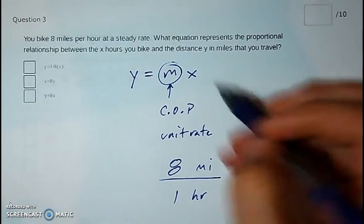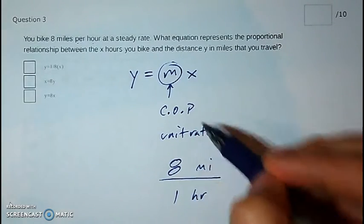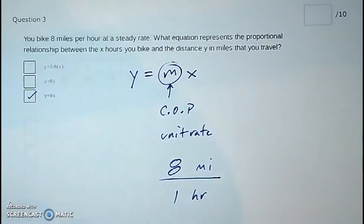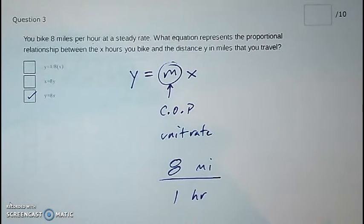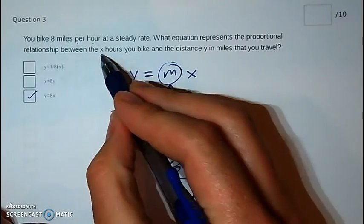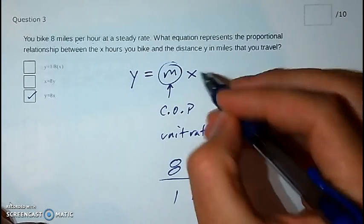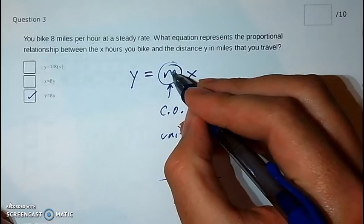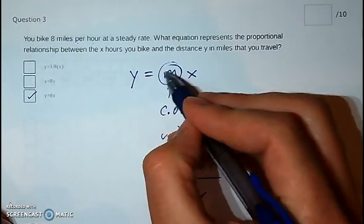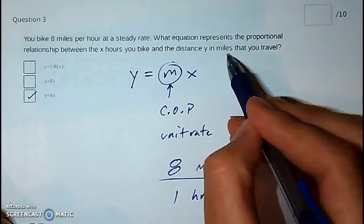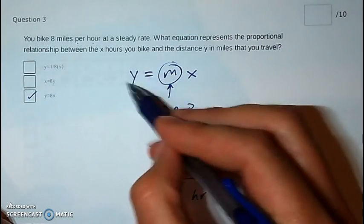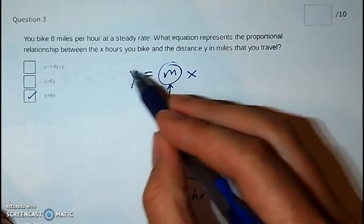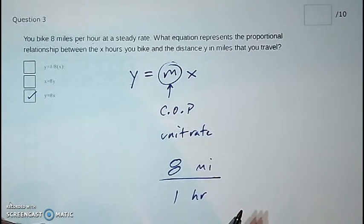It's literally as simple as that — you just need to memorize that. Y equals 8x; 8 is the constant of proportionality, the unit rate. If you think about it, x is the hours that you bike. Say you bike one hour: that'd be one times eight, and that tells you the distance in miles that you've actually traveled, which would be eight miles.